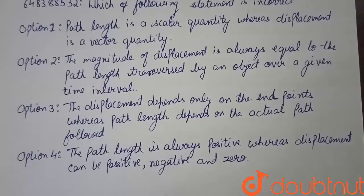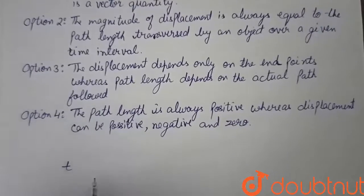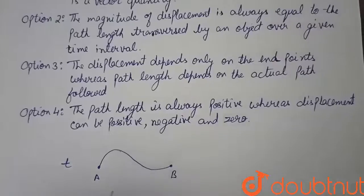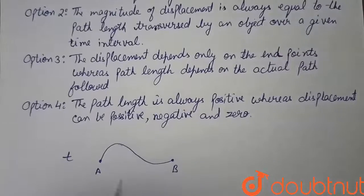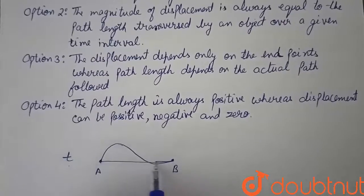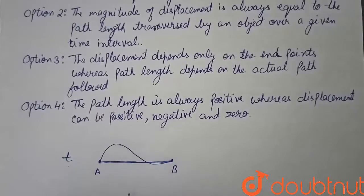If an object moves left to right the displacement may be positive, and when it moves right to left it is negative. For example, if a particle travels from A to B along a curvy path, and another particle travels from A to B in a straight line in the same time interval, the straight line AB is the displacement. Clearly, the magnitude of displacement is not equal to the path length. So option 2 is incorrect.